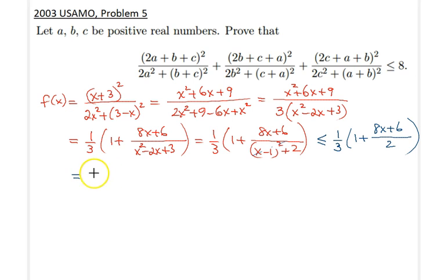That thing is less than or equal to one-third times (4a + 4) plus (4b + 4) plus (4c + 4).